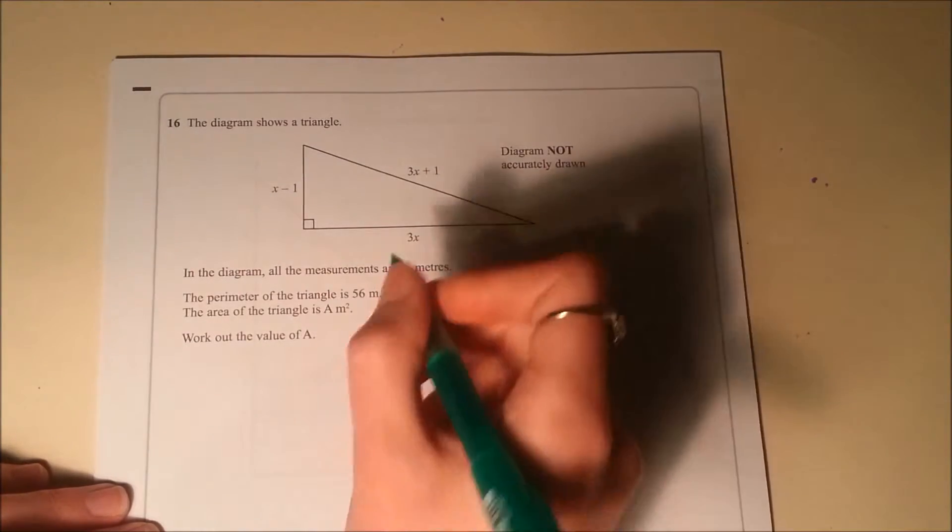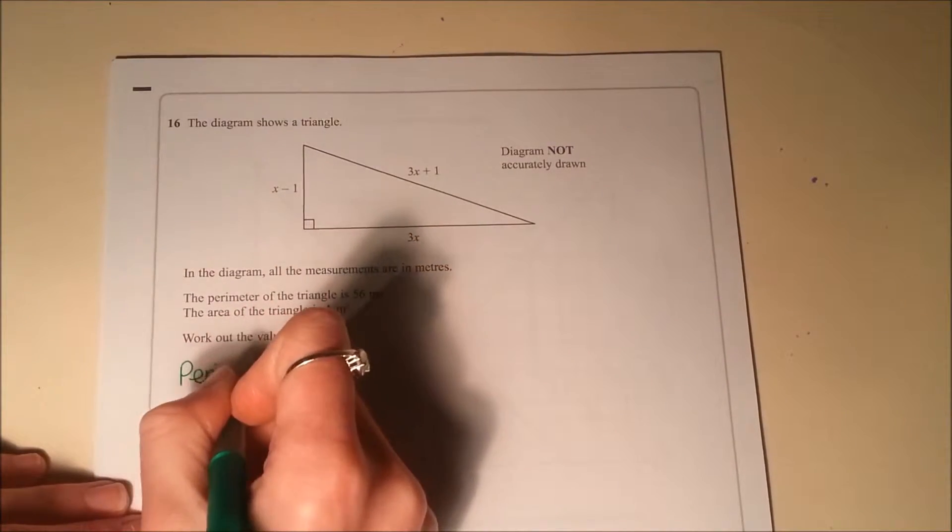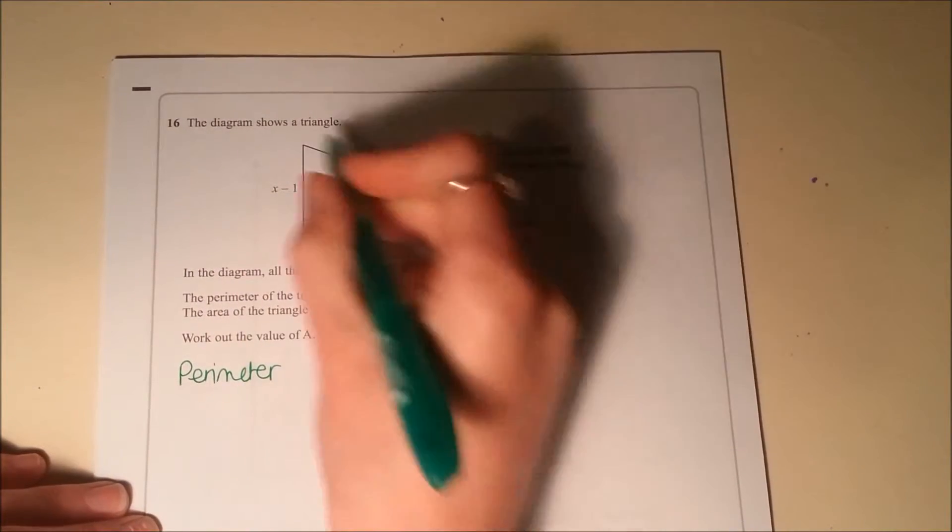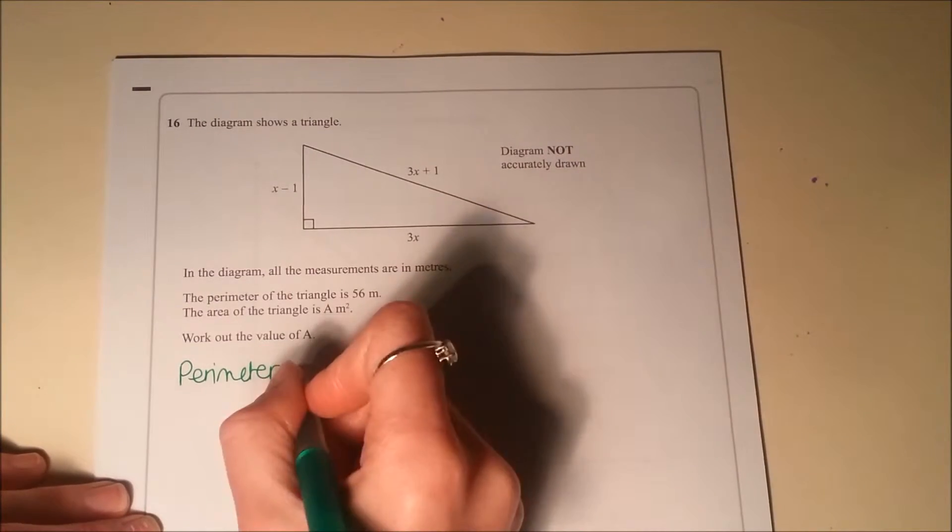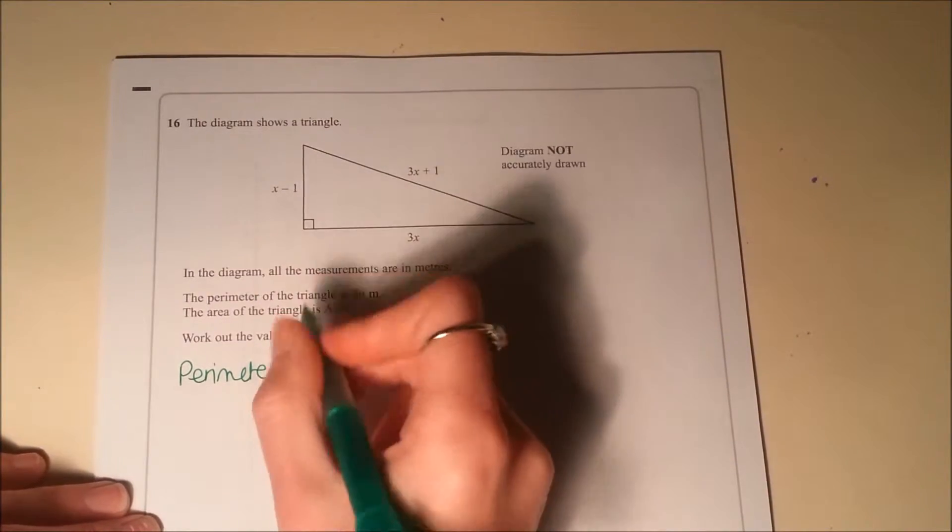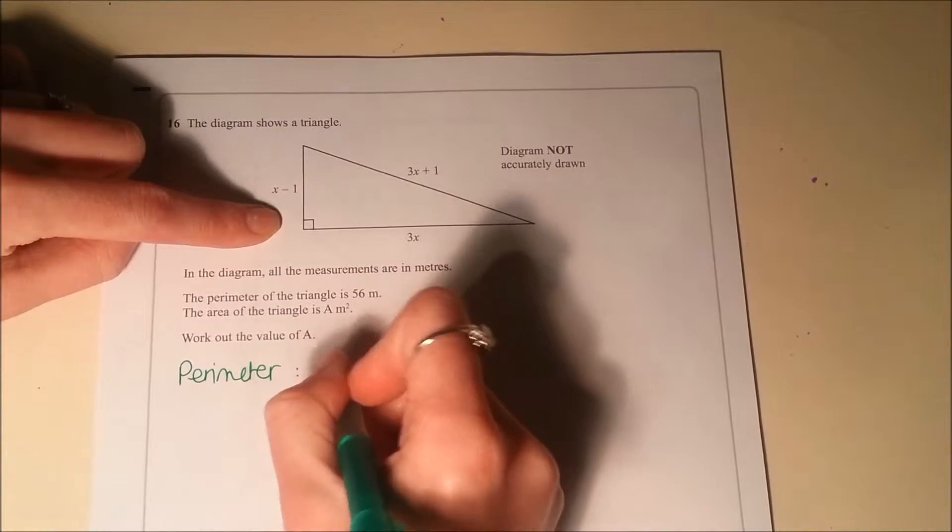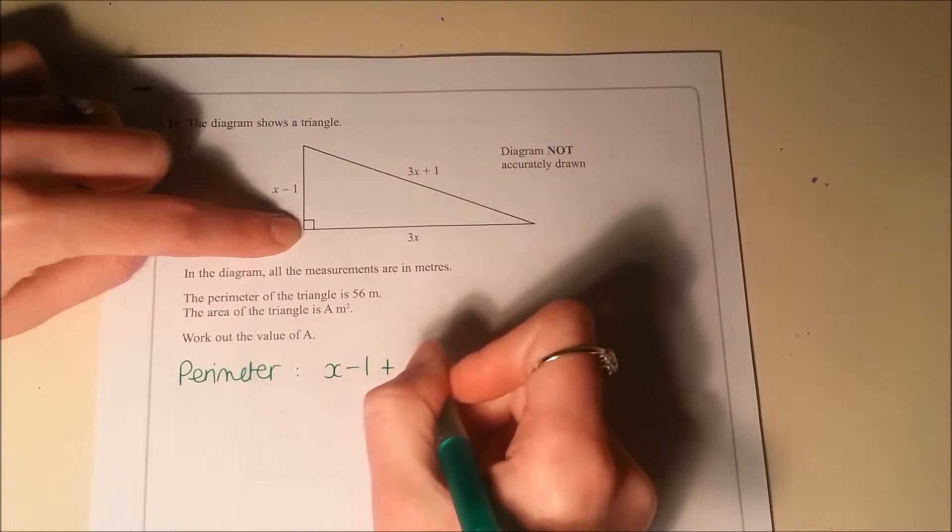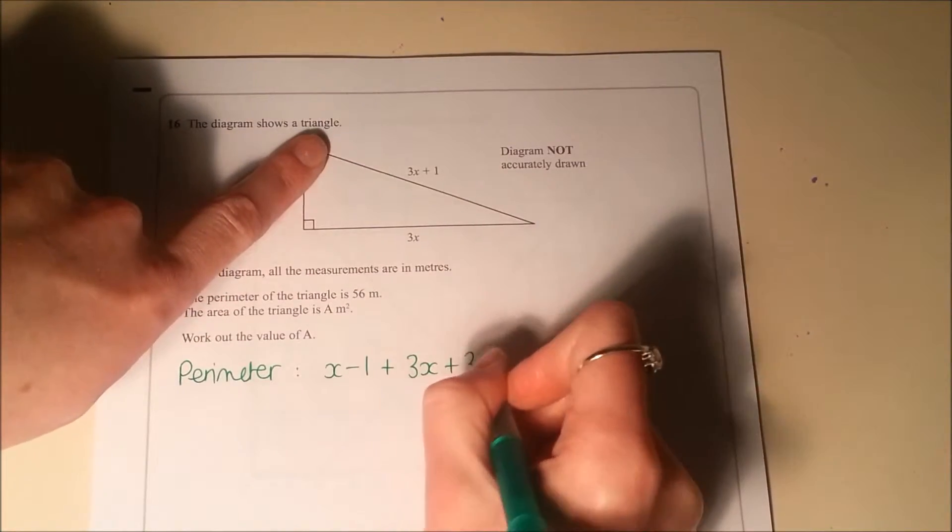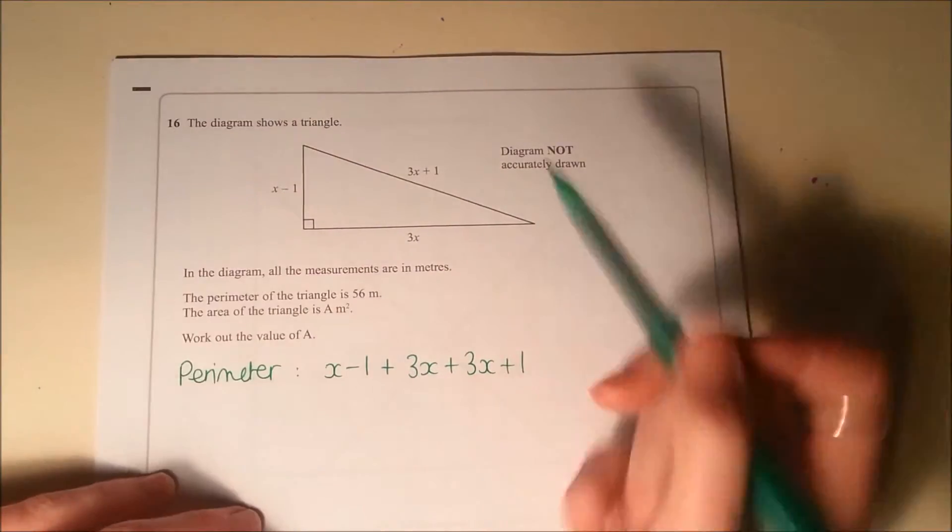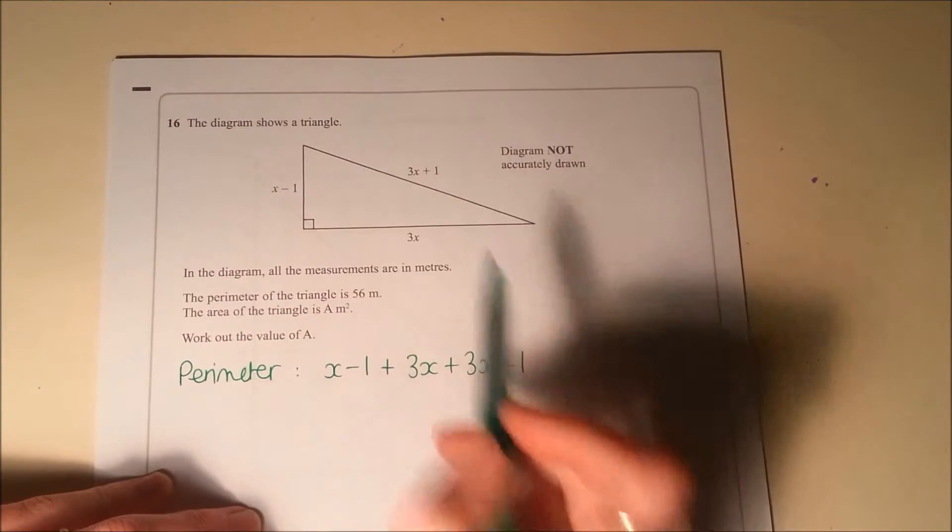So the first thing we've got to do is think about how we find the perimeter, and that's the length all the way around the outside. So here, if I was going to write down an expression for the perimeter, I would have x minus 1 plus 3x plus 3x plus 1. So I find the perimeter by adding up all of those side lengths.